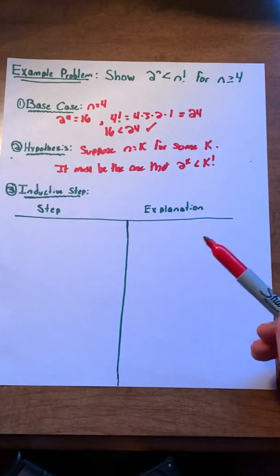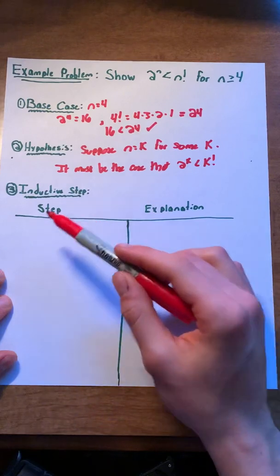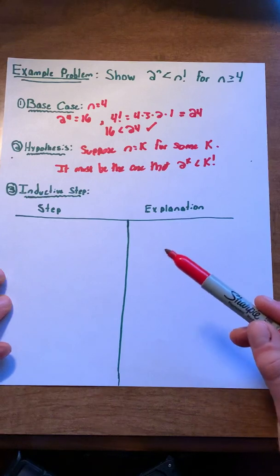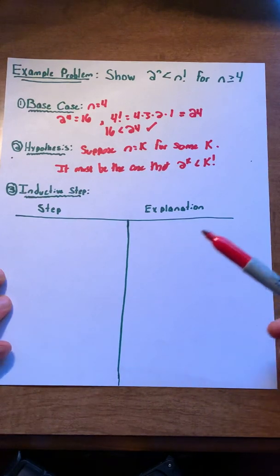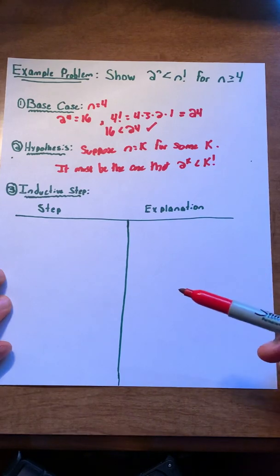Now we're going to go into our inductive step. I've written out this step with the actual step and an explanation to make it easier for you to understand. This isn't something you actually have to do when solving the problem, but I highly recommend it. It makes it a lot easier to understand what's going on in the argument itself.